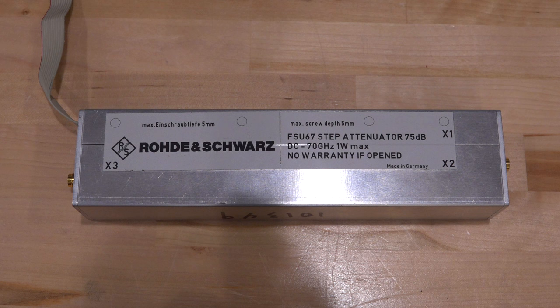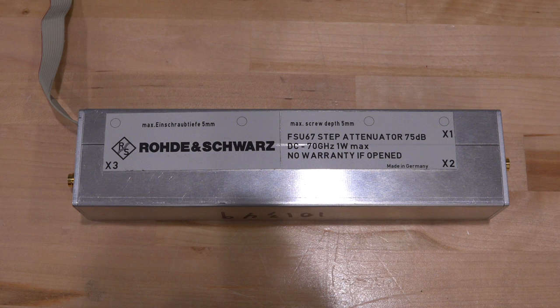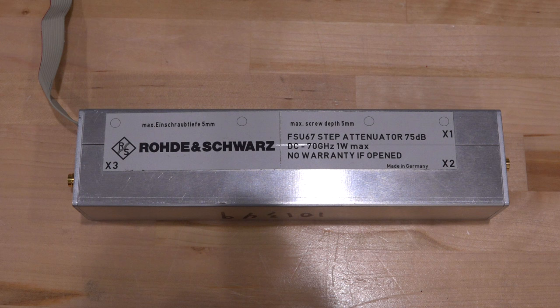It may not sound so exciting, but this particular one works from DC to 70 GHz and it has 75 dB of controllable attenuation. We've looked at electromechanical attenuators on the channel before, but this is by far the highest frequency one we're going to take apart.